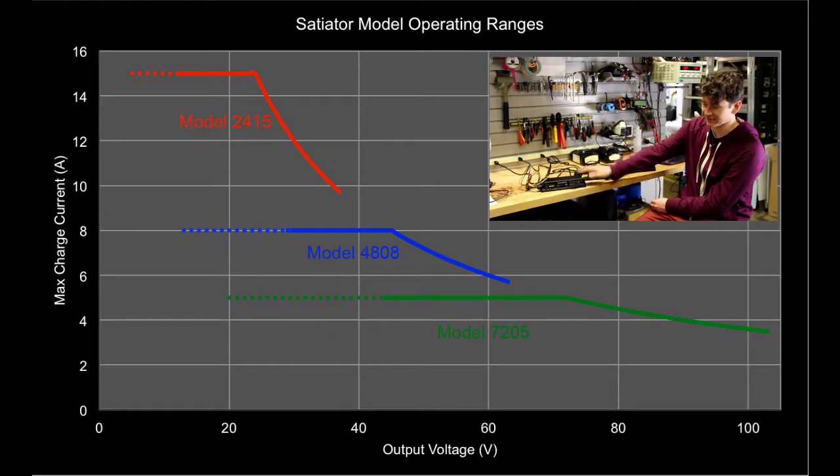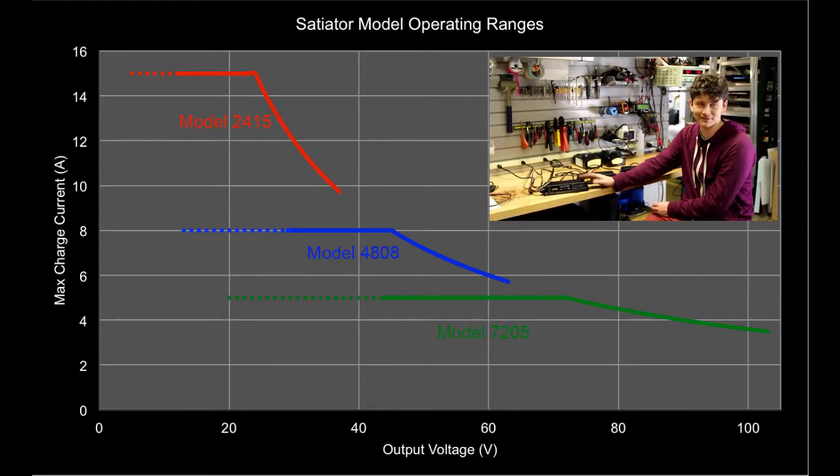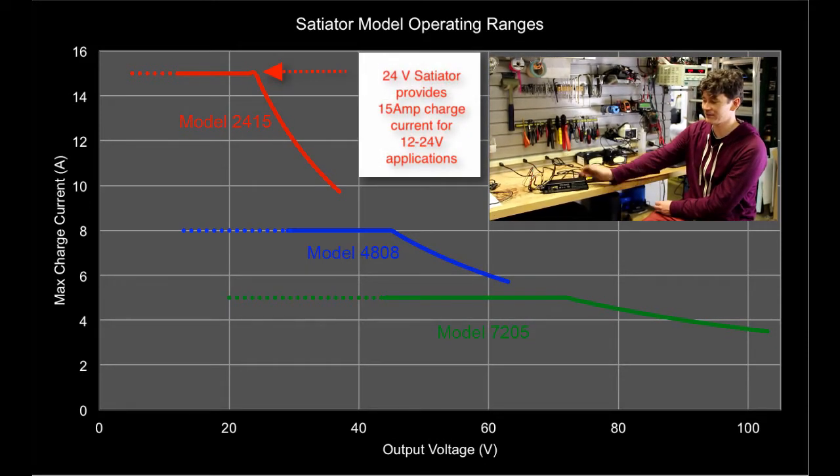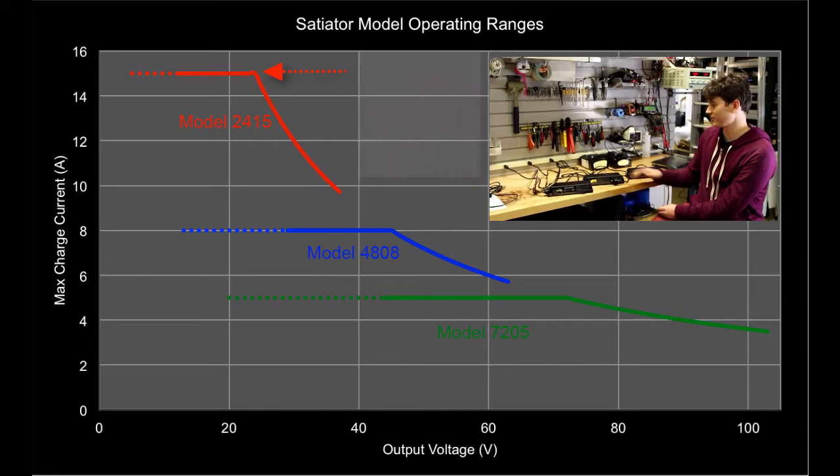And not too many electric bikes are running 24 volts but those that do can certainly benefit by having a very rapid 15 amp charging current and in that case you would be able to gain a lot from using our 24 volt device over one of the other two.